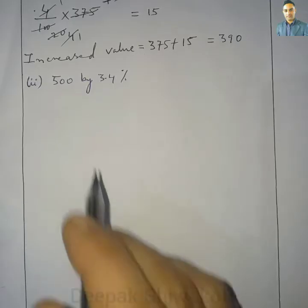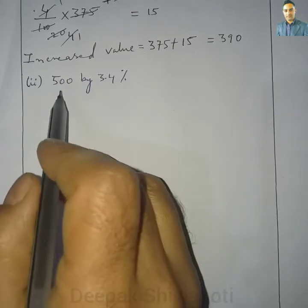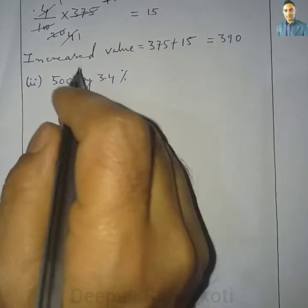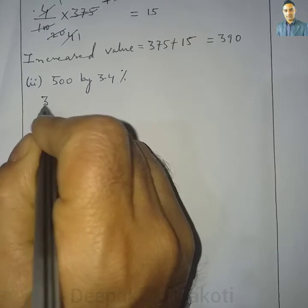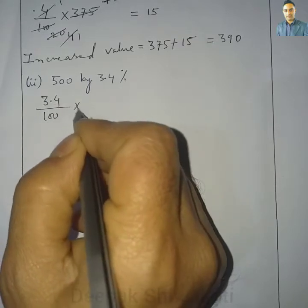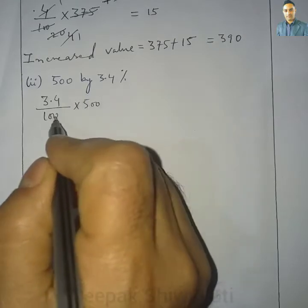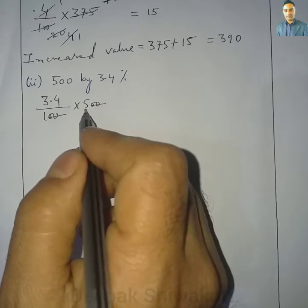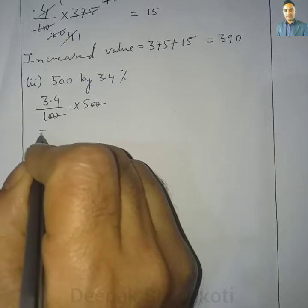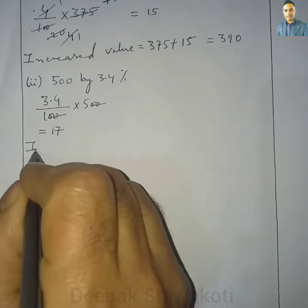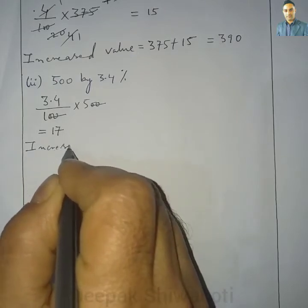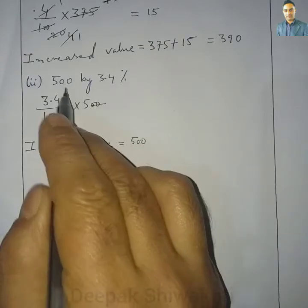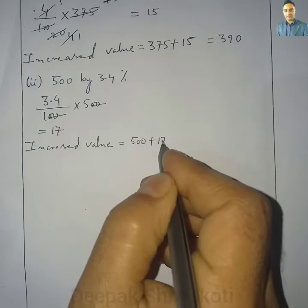Question 1.2: Increase 500 by 3.4%. We calculate 3.4% of 500. 5 multiplied by 3.4 gives us 17. The increased value is equal to 500 plus 17, which equals 517.